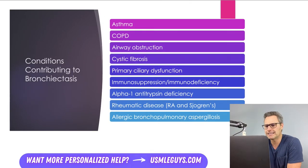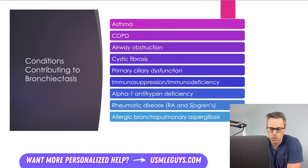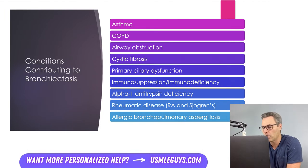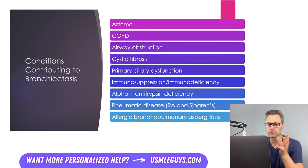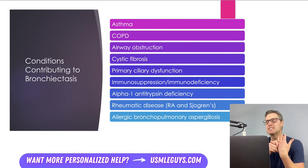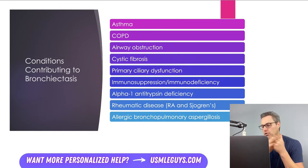Conditions that can lead to bronchiectasis contribute via infection, impaired drainage, airway obstruction, or impaired host immune responses. Airway obstruction can be caused by foreign body aspiration, intraluminal or extraluminal growth, obstructive lung diseases like asthma, COPD, or alpha-1 antitrypsin deficiency. Cystic fibrosis and primary ciliary dysfunction also cause obstruction. Immunosuppression — from biologic disease-modifying agents or genetic immunodeficiencies — can contribute. Autoimmune diseases such as rheumatic disease and Sjogren's syndrome, and infections particularly with aspergillus, are also causes.